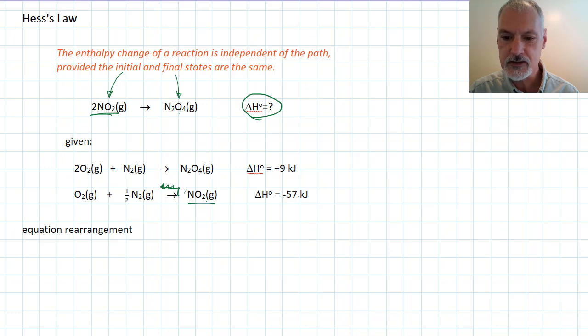Delta H for this reaction is negative 57, that means it's an exothermic reaction. We can think of the 57 kilojoules as being on this side. If I take this reaction and drive it in the other direction, heat then becomes a requirement, and the heat for this reaction becomes that of an endothermic reaction.